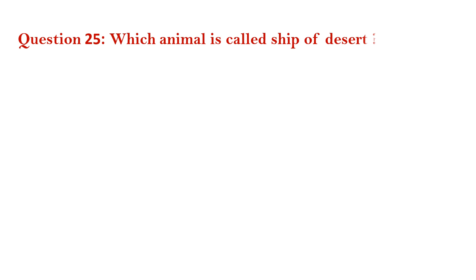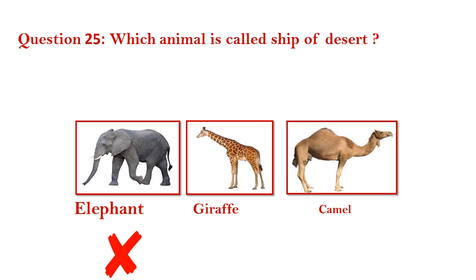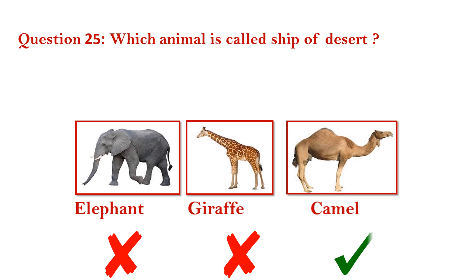Question number 25. Which animal is called the ship of the desert? Elephant — wrong. Giraffe — wrong. Camel — right. Answer is camel.